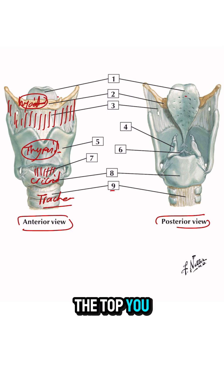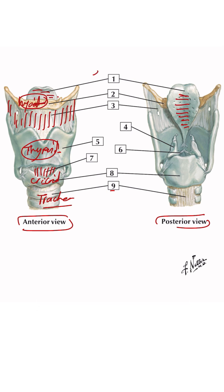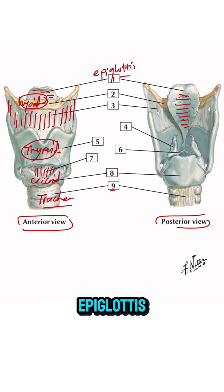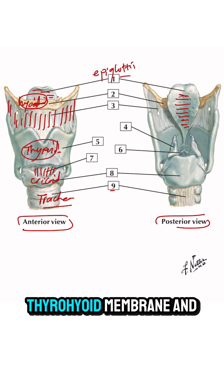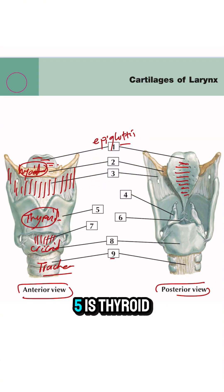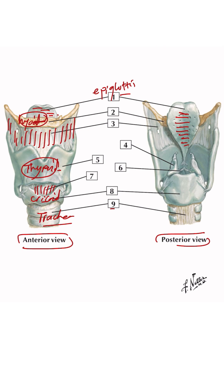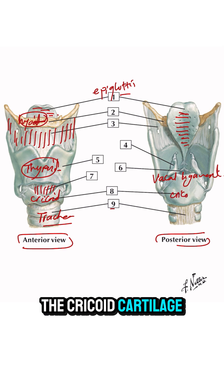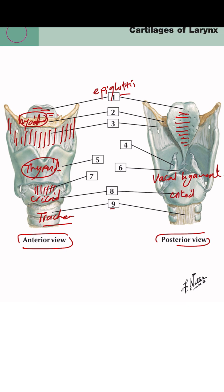On the top, you can see another cartilage, which is the epiglottis — number one. So in a systematic manner: number one is the epiglottis, two is the hyoid bone, three is the thyrohyoid membrane, four is the arytenoid cartilage, five is the thyroid cartilage, six is the vocal ligaments, seven is the cricothyroid membrane, eight is the cricoid cartilage, and nine is the trachea.